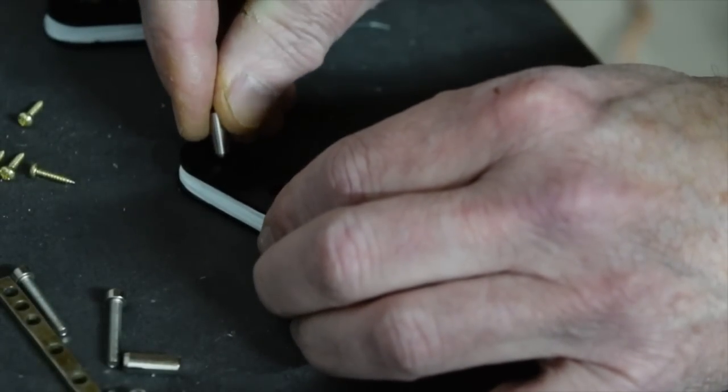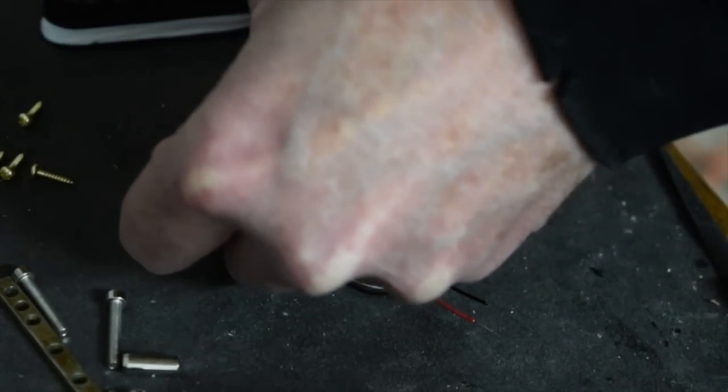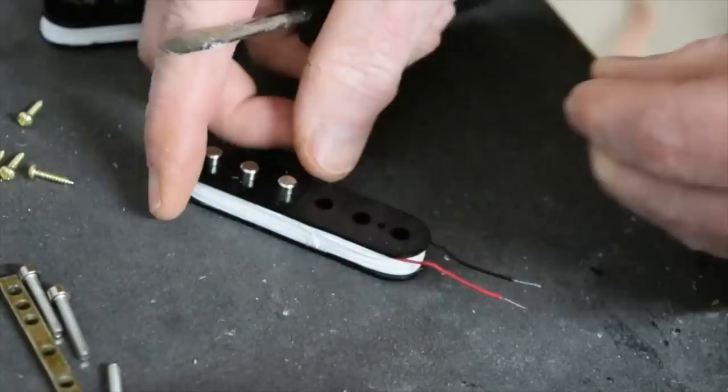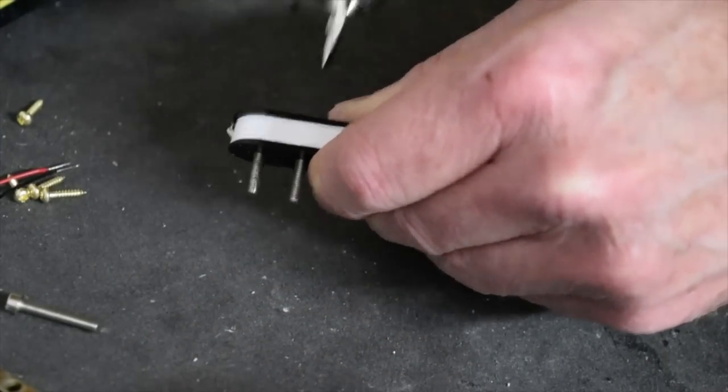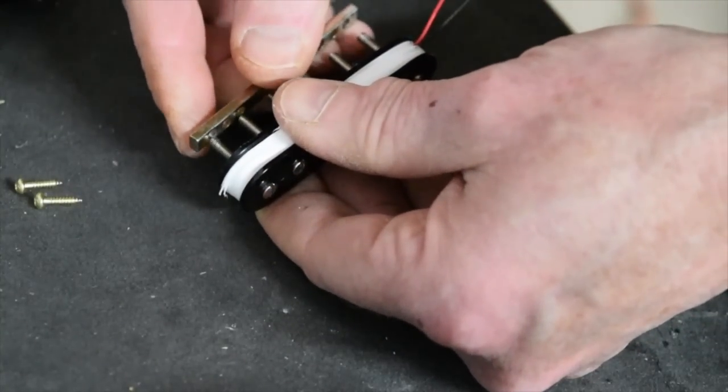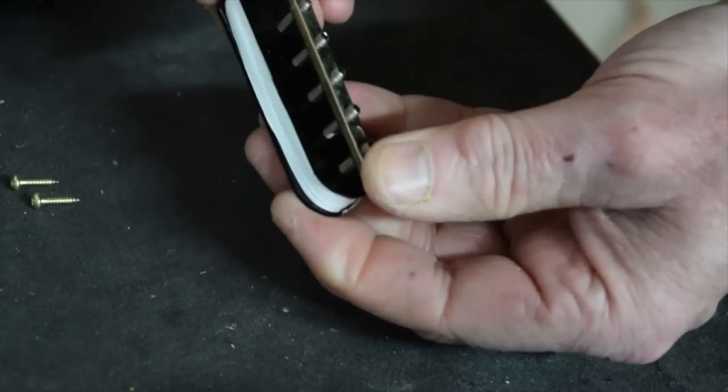To install the slugs into the slug bobbin, I installed them from the back and pressed them into place with a screwdriver. The adjustable poles are installed using an electric screwdriver. The metal spacer is then installed on the ends of the adjustable pole pieces.